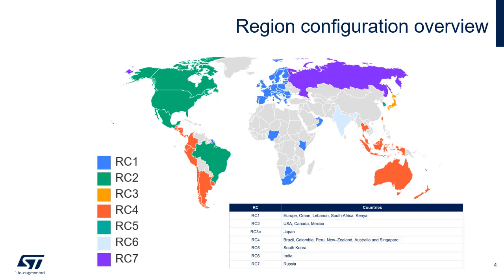Messages are forwarded to third-party application servers that may be used to manage a fleet of devices. The European, North American, and Asian markets have different spectrum allocations and regulatory requirements. Sigfox has split requirements in various region configurations, called RC. Seven region configurations are available and are depicted in this picture.